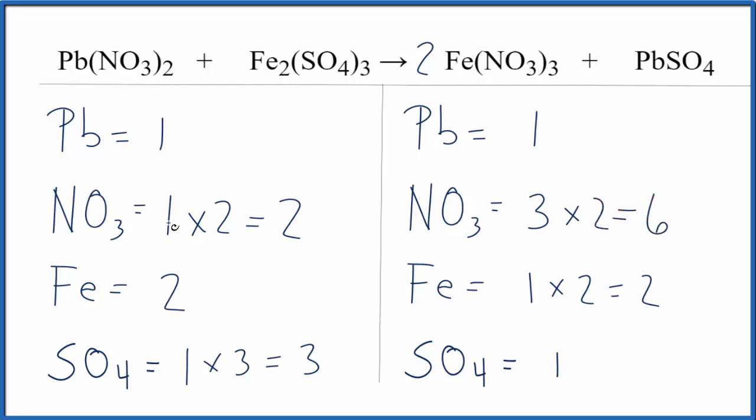But I can fix those if I put a 3 in front of the Pb(NO3)2. I have 1 times 3. Let's fix our nitrates. So I have 1 nitrate here times 2, so I have 2 nitrates, and I'm going to multiply that by the 3, and that will give me 6 of these nitrates.